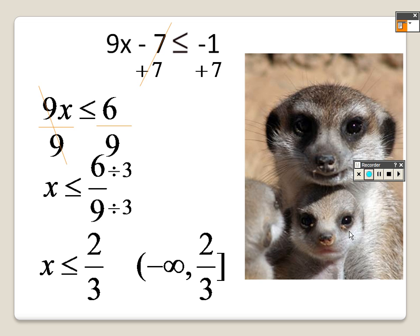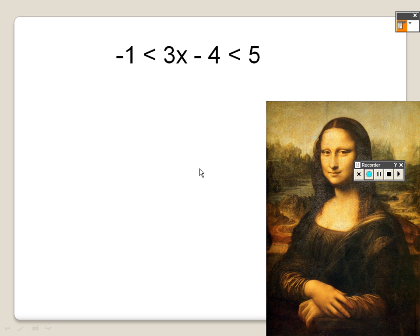This is just so you can get some practice writing these in our new interval notation — remember it's low to high. Everything less than 2 thirds is lower than it, so that's why it's negative infinity up to 2 thirds. The reason why it's a square bracket is because this is a less than or equal to.